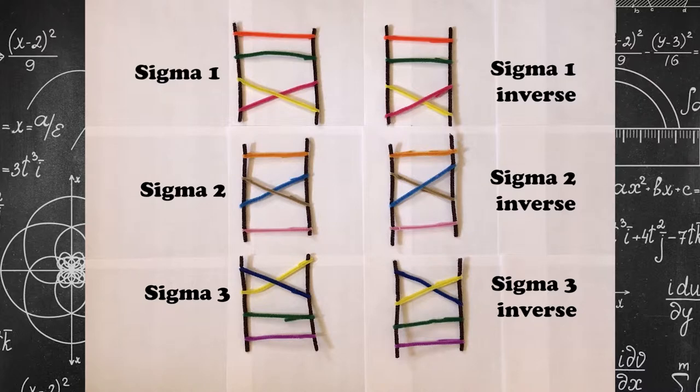And sigma 2, the second and third strands, twisted clockwise. Sigma 2 inverse is twisted counter-clockwise.